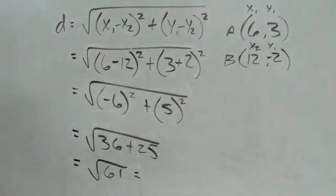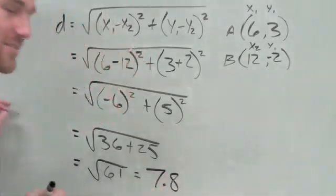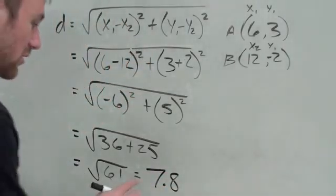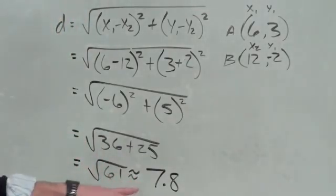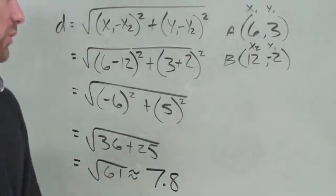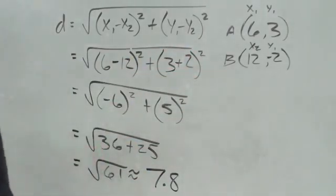Sometimes they want you to leave that as the answer. But for this case, we would find out what that answer is. The square root of 61 is probably somewhere around 7 point something. 7.8, that's what it would be. And that would be our answer. Actually we would put this little squiggly line because it's not going to be an exact number. So that means approximately 7.8. So we know the distance from A to B is about 7.8.